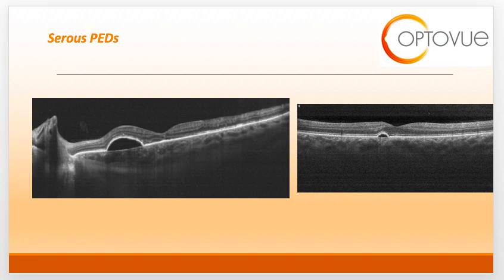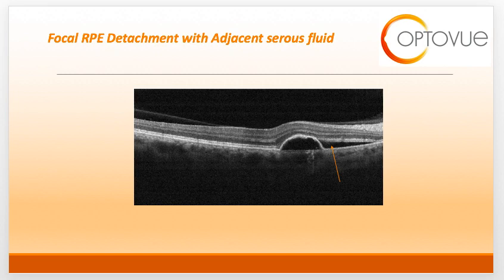This slide shows a serous PED — a large one on the left, a small one on the right. A serous PED will appear as a distinct circular or oval-like detachment of the RPE, dome-shaped with a well-demarcated border. The important thing is that the internal reflectivity is clear, indicating the serous nature of the detachment. Whenever you have a pigment epithelial detachment with an adjacent area of serous fluid, you need to rule out the presence of a choroidal neovascular membrane.